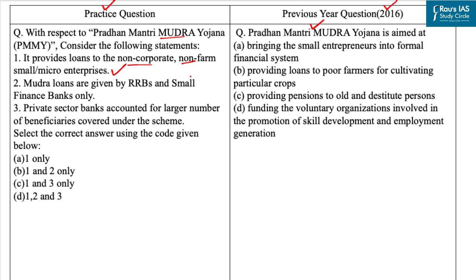Mudra has created three special products — Shishu, Kishor, and Tarun — as per the stage of growth and funding needs of the beneficiary micro unit. The second statement is: Mudra loans are given by regional rural banks and small finance banks only. This statement is incorrect — Mudra loans are given by commercial banks, cooperative banks, micro finance institutions, and non-banking financial companies. Mudra does not lend directly to micro entrepreneurs or individuals; it provides funding to the non-corporate small business sector through various last-mile financial institutions like RRBs, banks, and small finance banks.